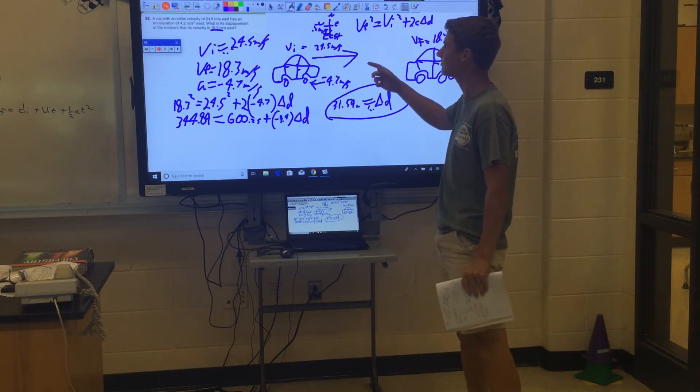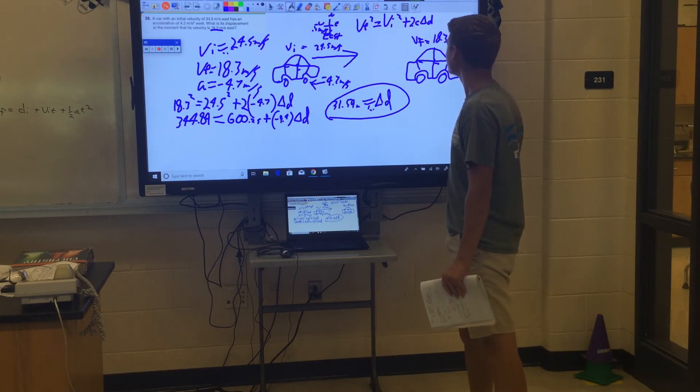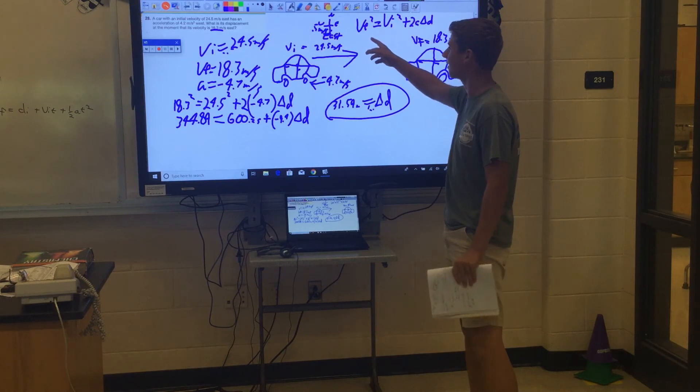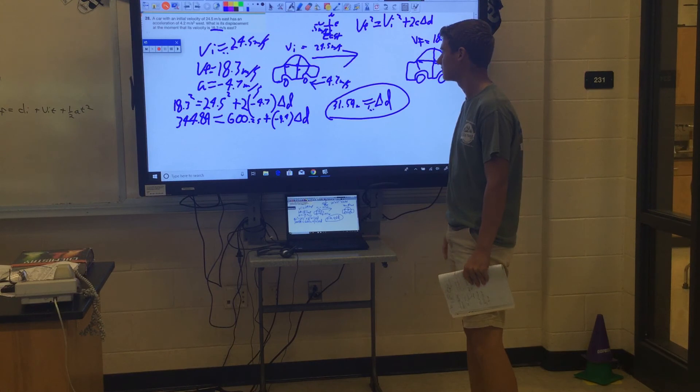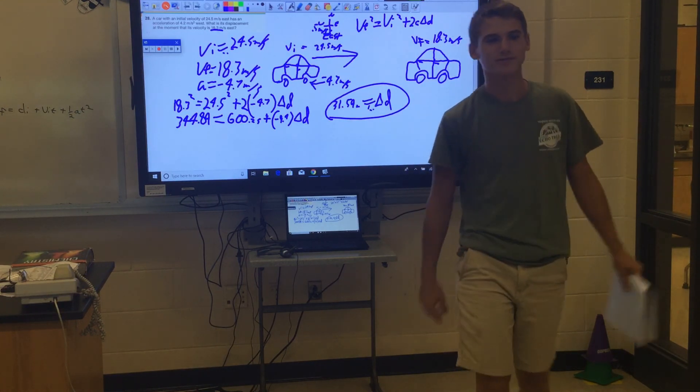Why did we use the vf squared equals vi squared plus 2a change of d? Because you didn't have any time, but you had your final and your initial. Because your final, you wanted to be at 18.3. Okay, and what variable did we solve for? The displacement. The displacement. Very good. Yep, nice job, everybody.